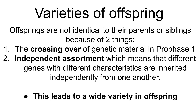The varieties of offspring: offspring are not identical to their parents or siblings because of two factors. Number one, the crossing over of genetic material in prophase one. And number two, independent assortment, which means that different genes with different characteristics are inherited independently from one another. This leads to a wide variety in offspring.